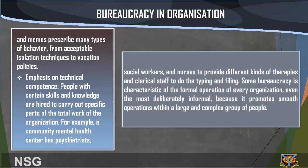Fourth, emphasis on technical competence: people with certain skills and knowledge are hired to carry out specific parts of the total work of the organization. For example, a community mental health center employs psychiatrists, social workers, and nurses to provide different kinds of therapies, and clerical staff to do the typing and filing. Some degree of bureaucracy is characteristic of the formal operation of every organization, because it promotes smooth operations within a large and complex group.